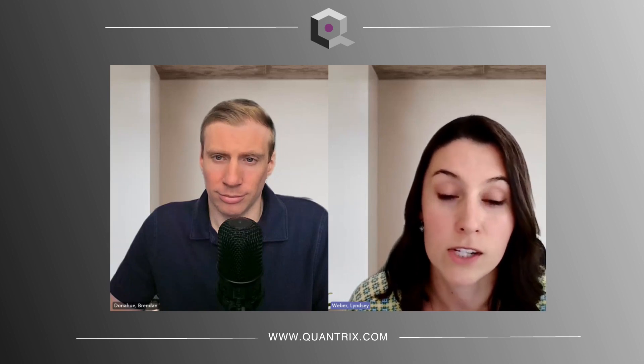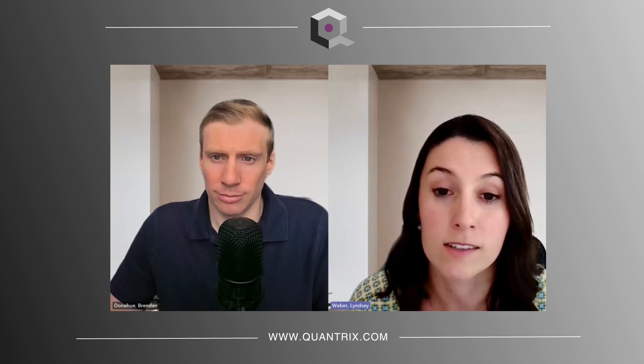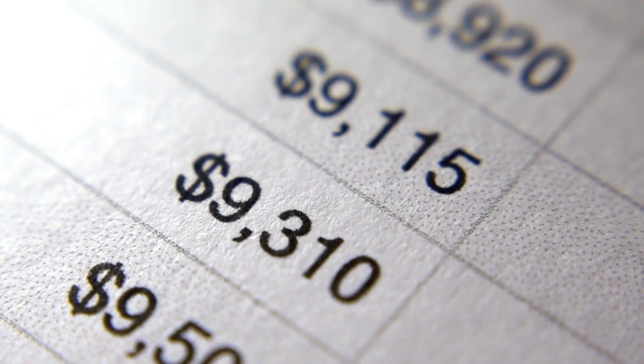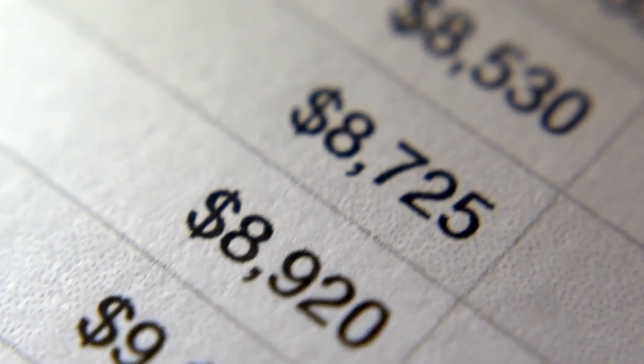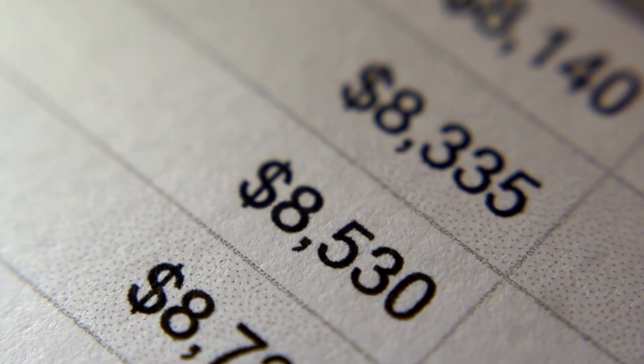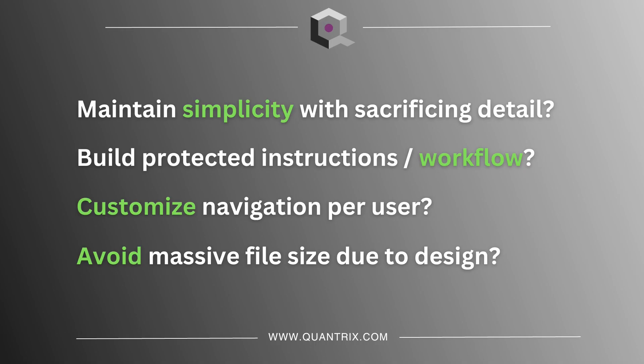Another challenge of building models anyone can understand is that we heavily rely on formatting and style to help make models more accessible. But the more conditional formatting, cell borders, and colors you incorporate, they can really overload the file size and negatively impact performance. This can be a really difficult balance to strike, particularly when you're in spreadsheets.